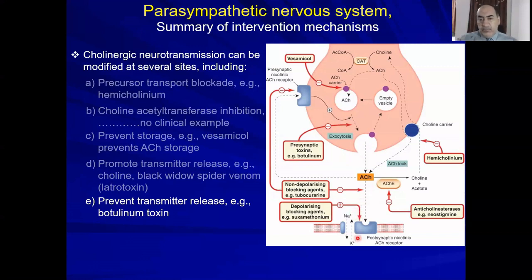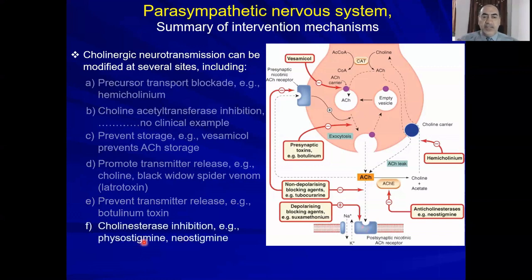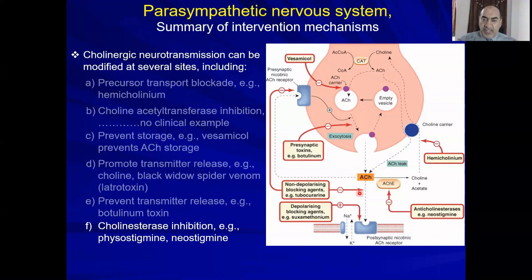In the synaptic cleft, acetylcholine can be broken down by the acetylcholinesterase enzyme. Drugs like physostigmine (mystic bean) can inhibit acetylcholinesterase, so acetylcholine will be present in large amounts at the receptor — facilitating the action of acetylcholine. That is why they are called indirect-acting parasympathomimetics.